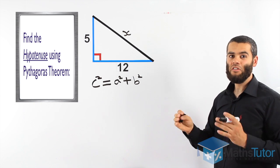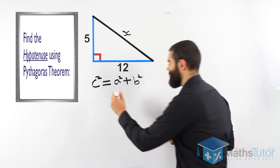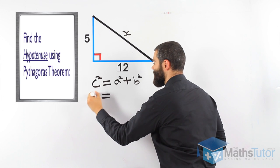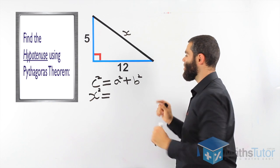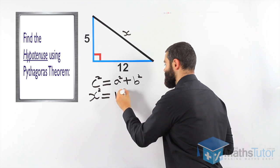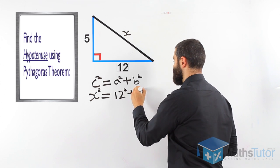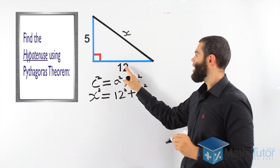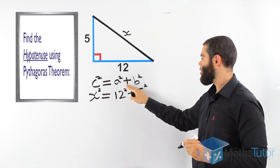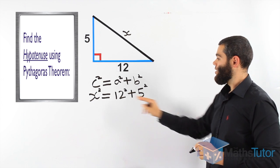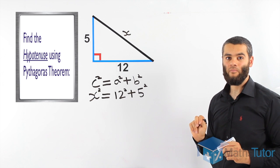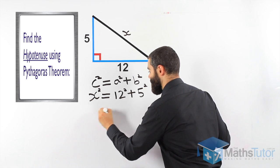Now let's substitute the information to see if we can find X. C squared, we know it is the hypotenuse, so it's actually X squared. A squared plus B squared are the two short sides. A, we'll put it as 12 squared, plus B squared, 5 squared. It doesn't really matter, A, B or B, A. As long as we know they are the two short sides, A and B are always the two short sides. Hypotenuse squared equals short side squared plus short side squared. Let's see how we can work it out.